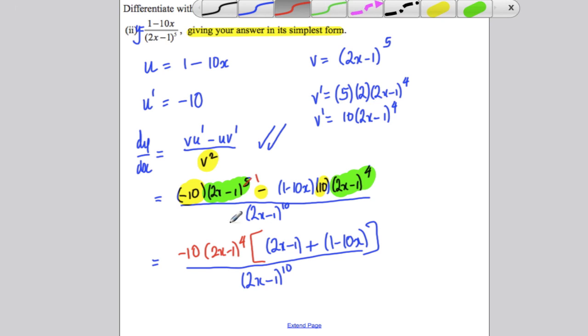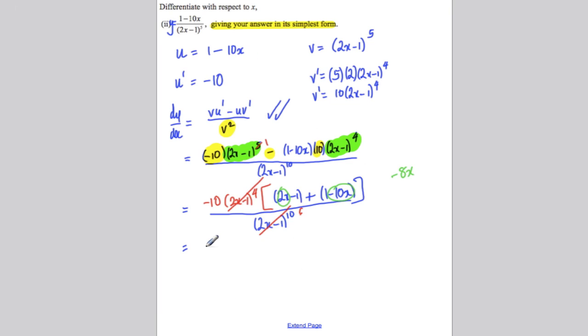Now you can do some cancelling here. You can cancel that with that, and there would be 6 of them left. And then you could say to yourself, well, 2x subtract 10x is negative 8x, and negative 1 add 1 is 0. So on the top, you would have negative 10 times negative 8x all over (2x - 1) to the 6, which is simply 80x over (2x - 1) to the power of 6.